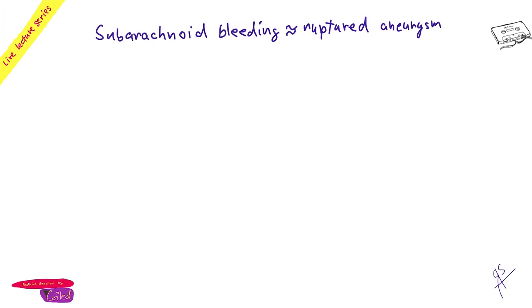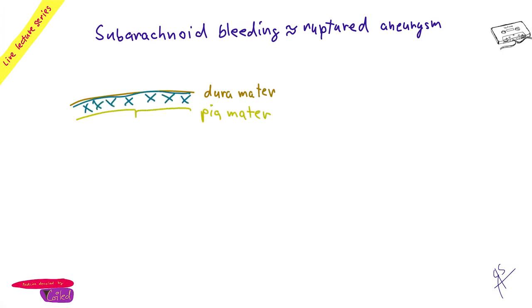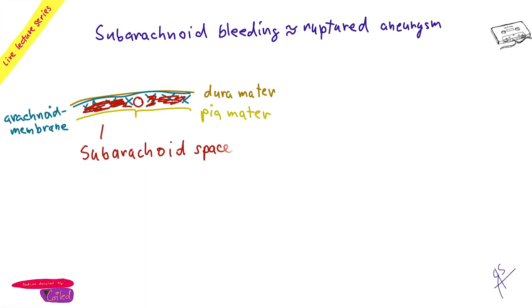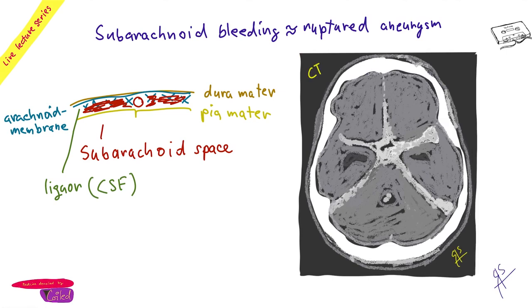Anatomically: the dura mater is outermost, then the arachnoid, and the pia mater lies directly on the brain. Bleeding occurs in the subarachnoid space between the arachnoid and pia. Students often imagine bleeding on top of the brain, but typically what you see on CT is blood at the bottom of the brain — in the basal cisterns, which fill with blood.